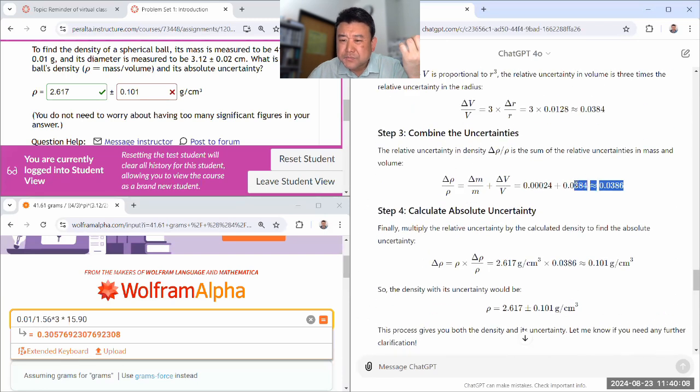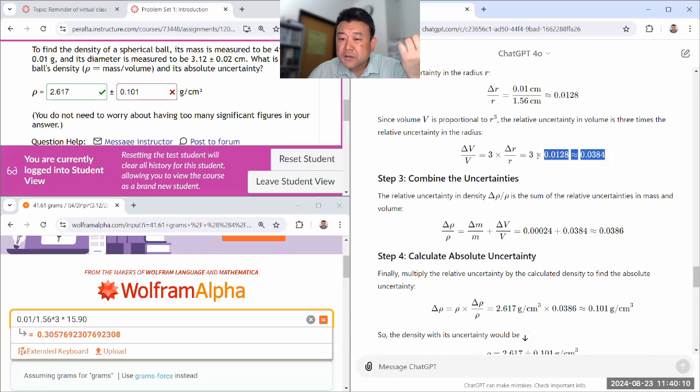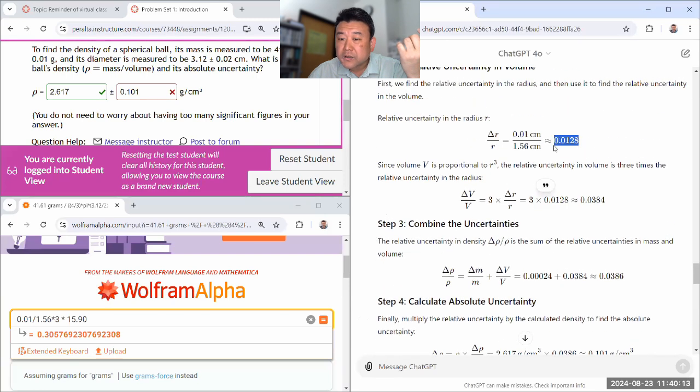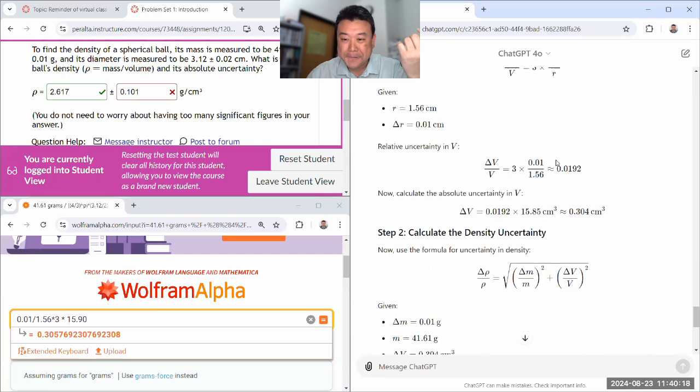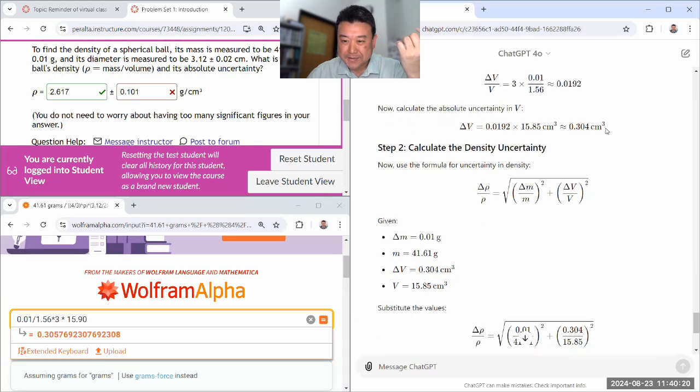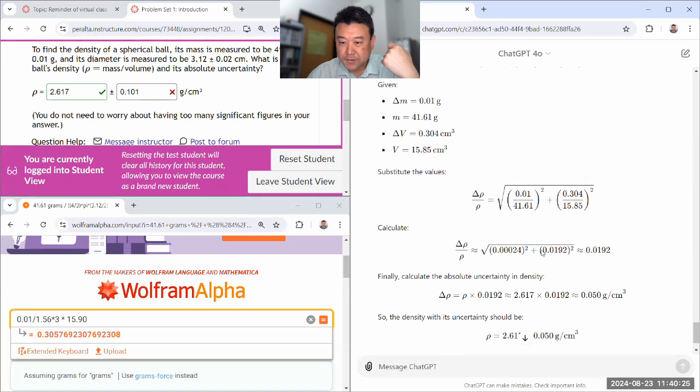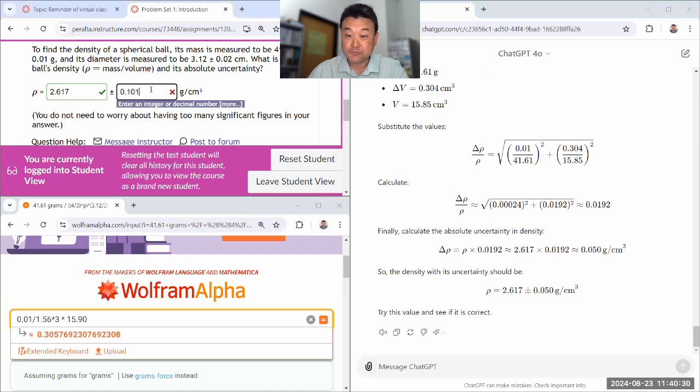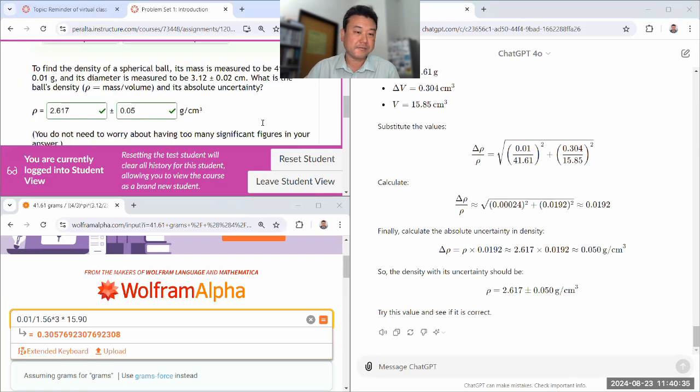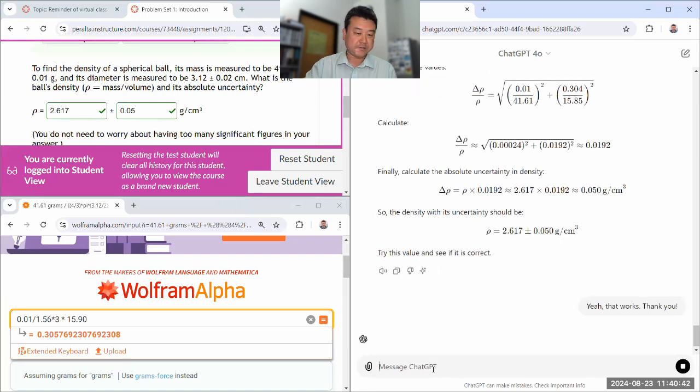So, you can say, I got 2.617 grams per cubic centimeter, which was graded as correct. But I have no idea how to do the plus or minus part. Can you help me? Let's see which way ChatGPT goes. There are a couple different ways to do it. You have relative uncertainty in mass. Relative uncertainty in volume. Yeah. There's a calculus reason for that. Ask me. I'll explain it in person. Or in my other solution, I guess, do explain the calculus reason for that.